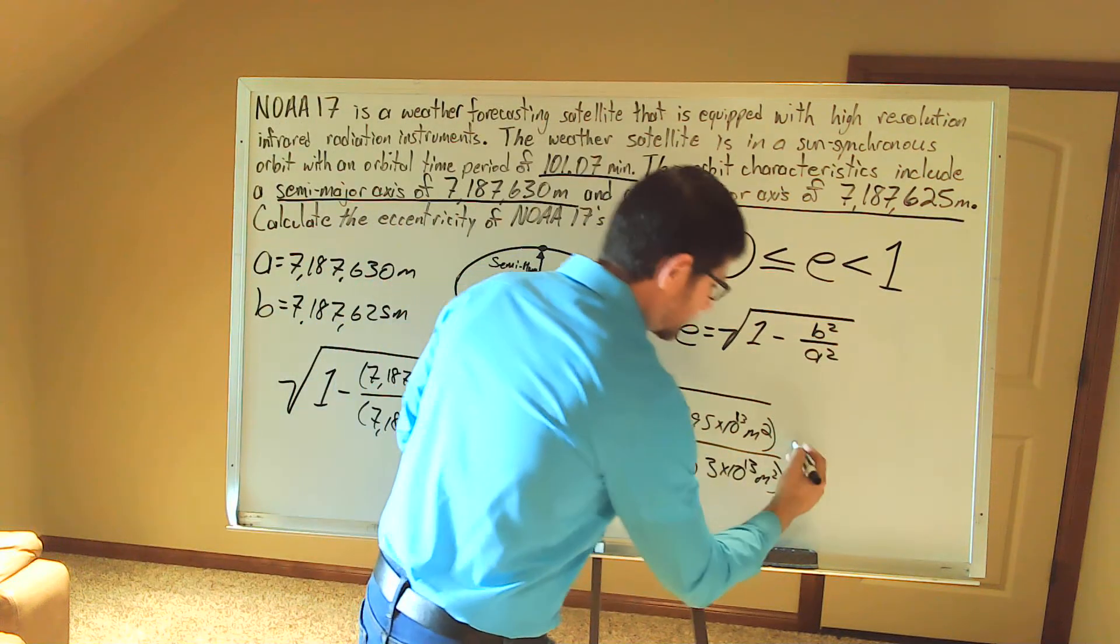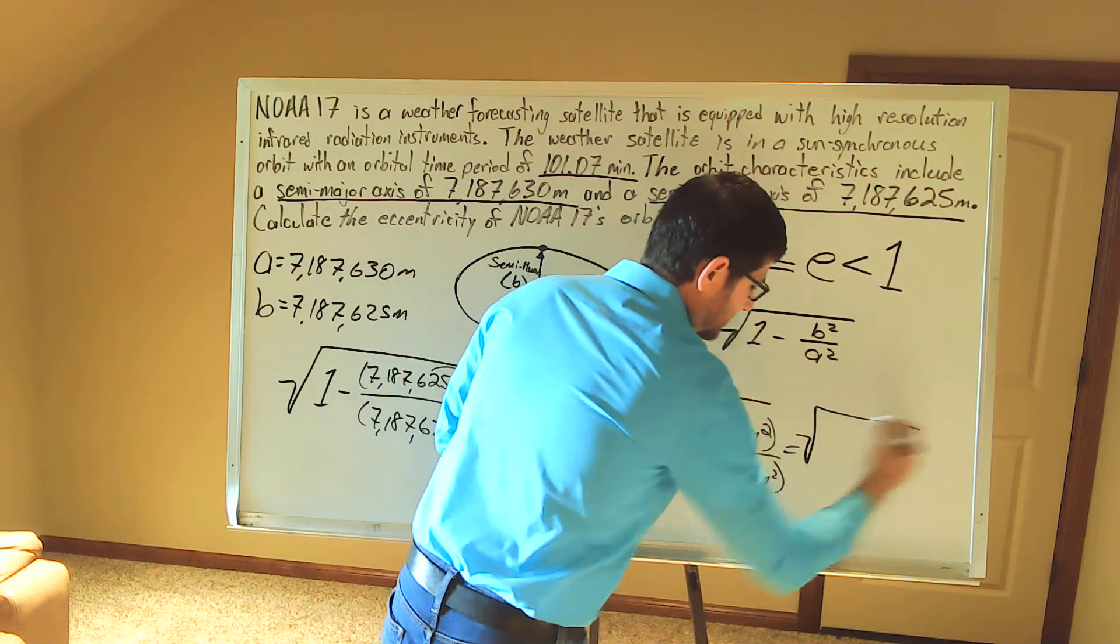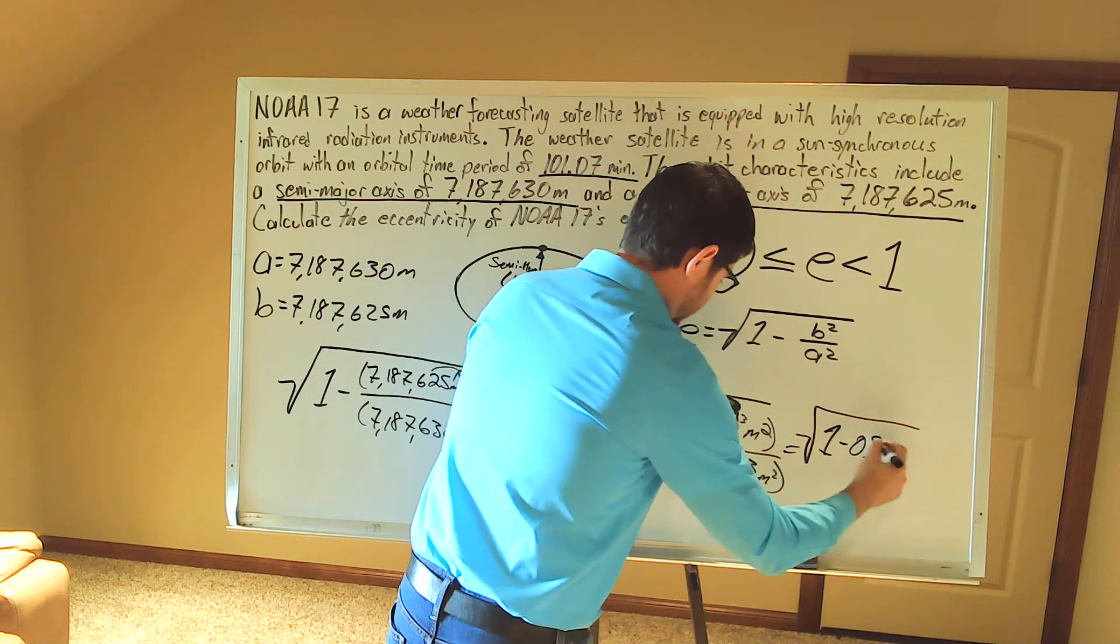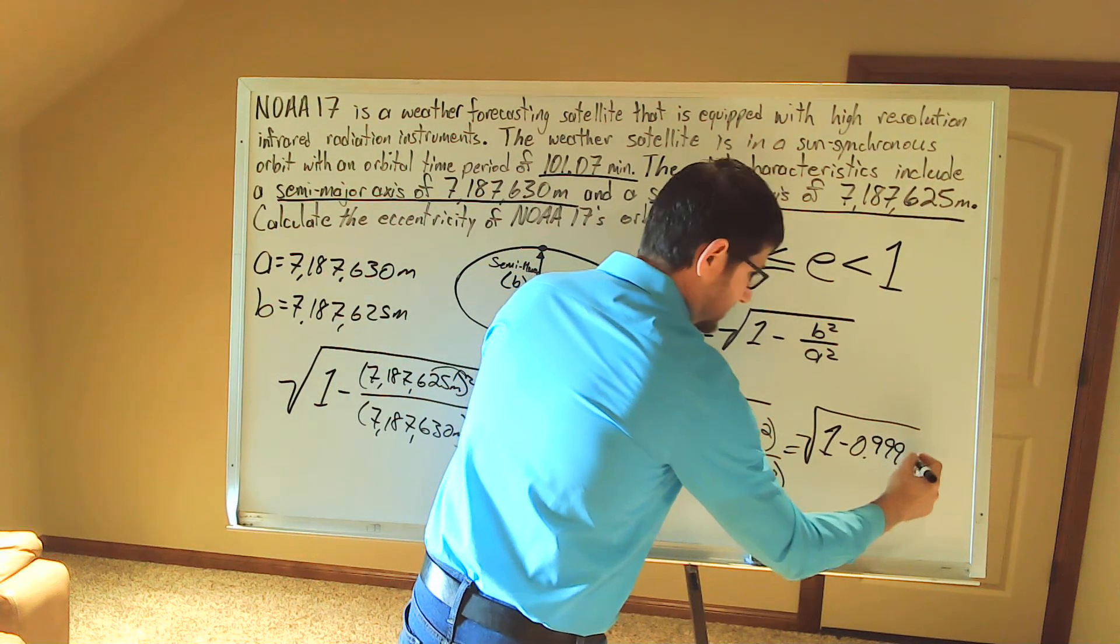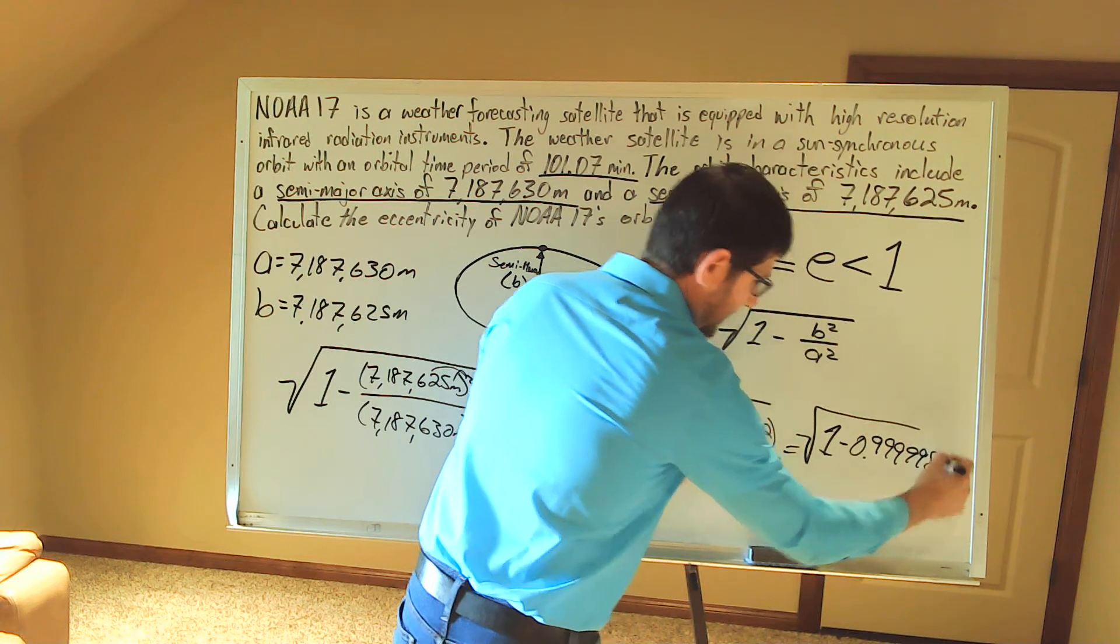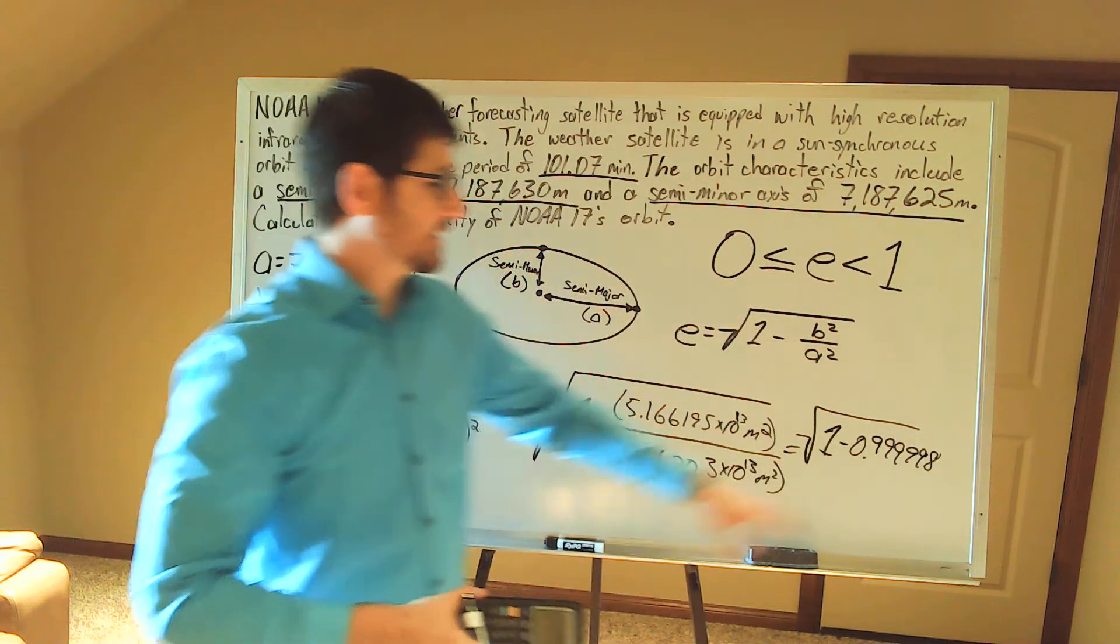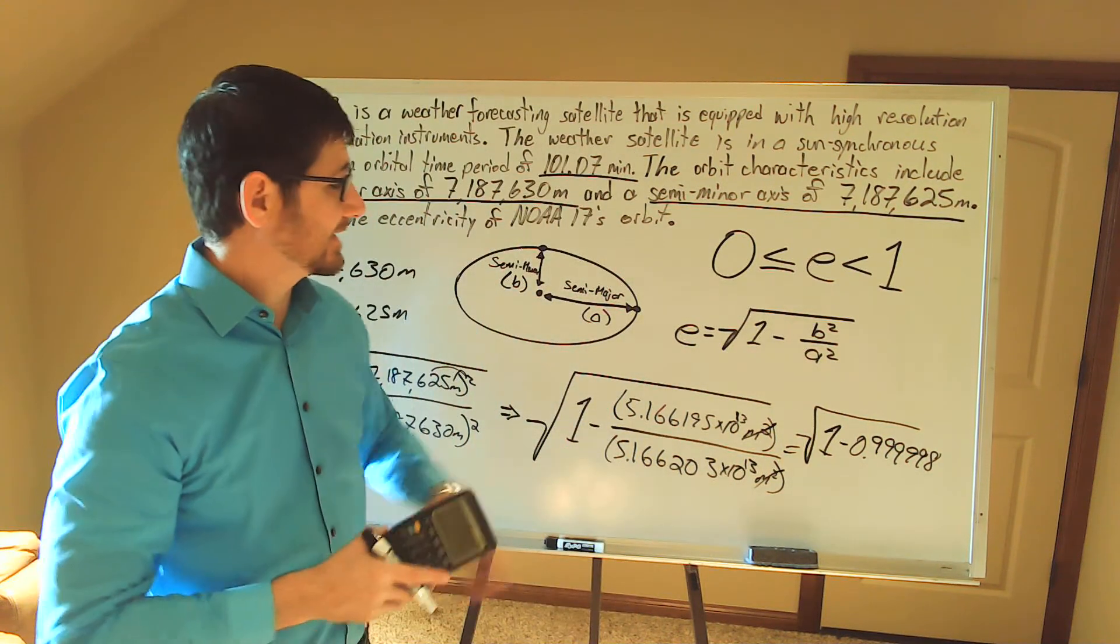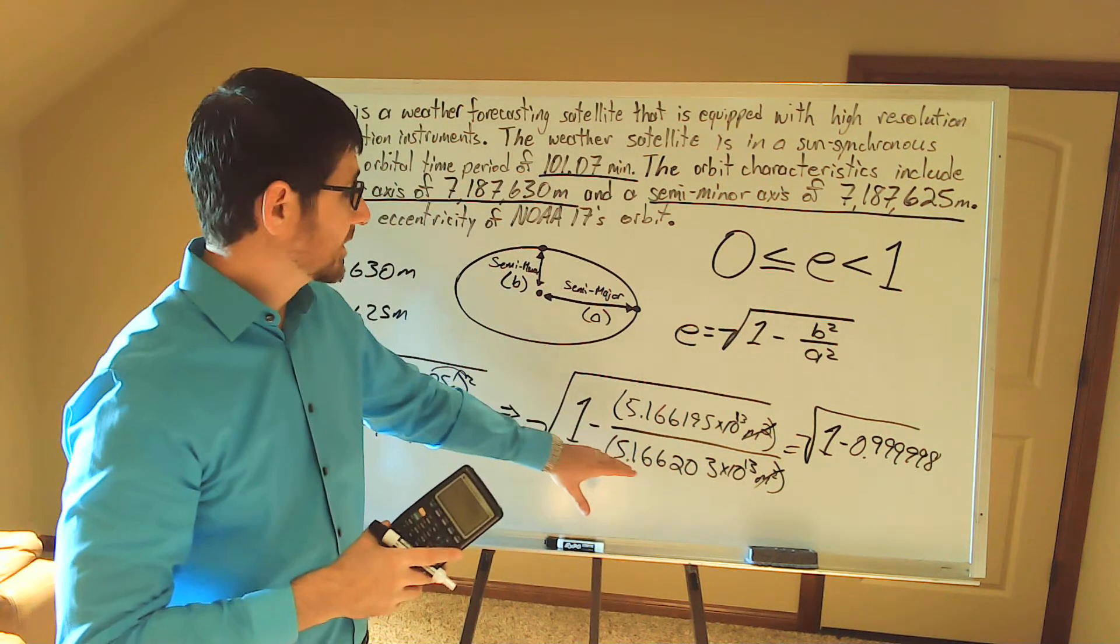This gives me 1 minus 0.9999998. And right now we don't have any units here because we have meters squared in the numerator and meters squared in the denominator.